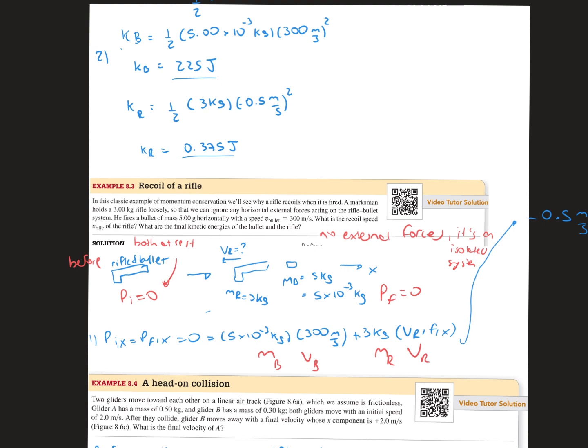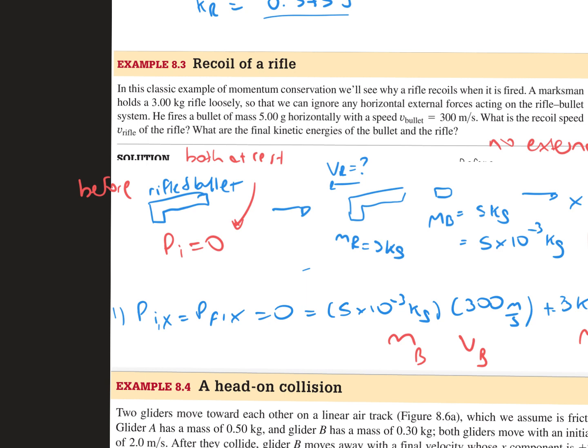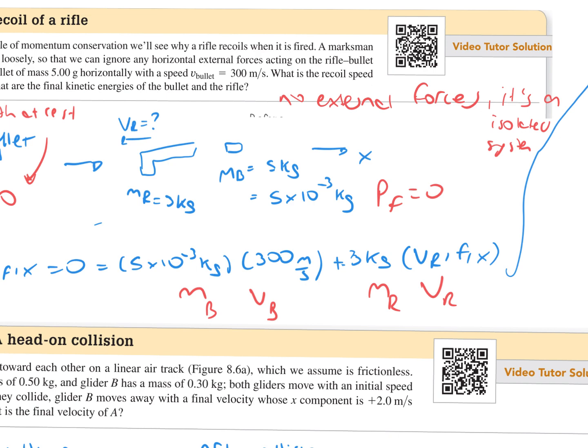Before anything happens, we have the rifle and the bullet together, both at rest, which means that we have a momentum of 0. Then as the bullet separates from the rifle, as it is fired, we still have a momentum of 0.